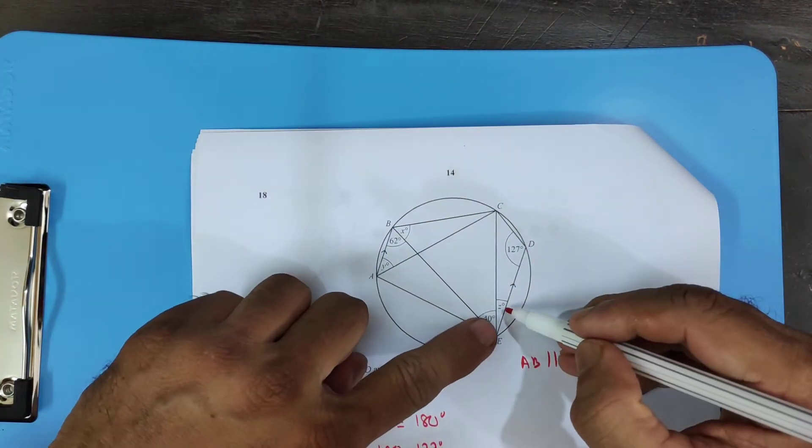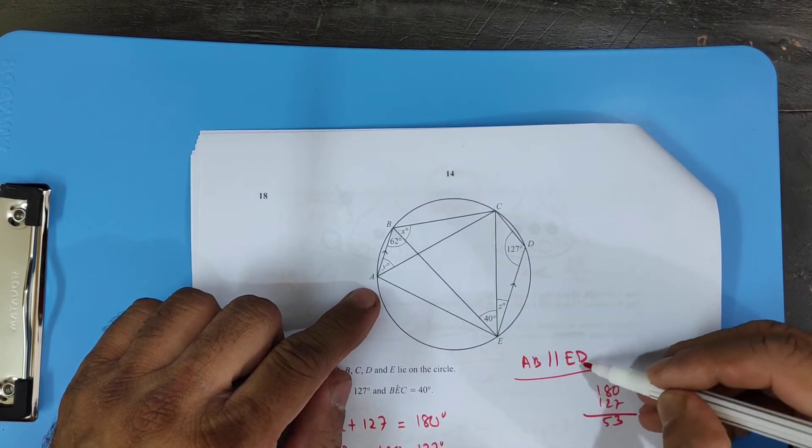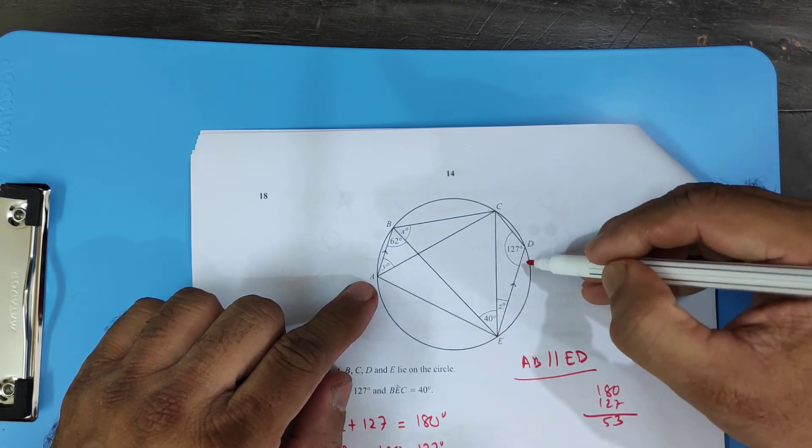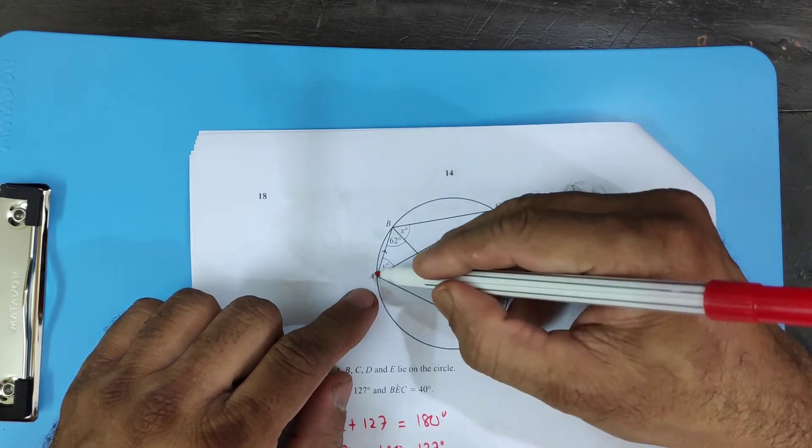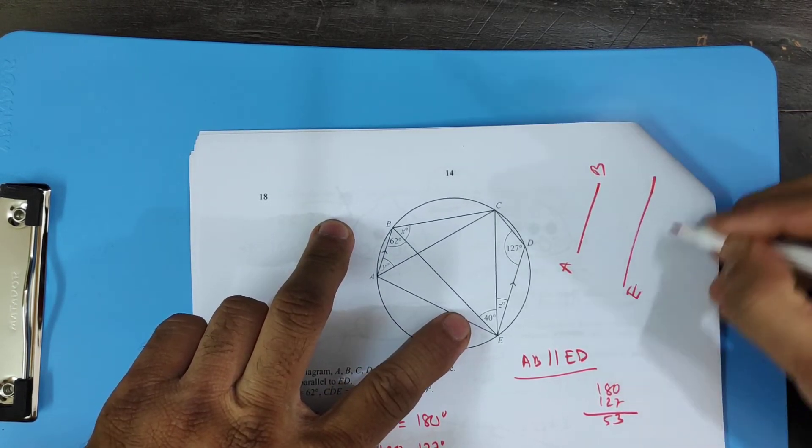Find z. Now this is z. See this parallel line. A b is parallel to e d. A b is parallel to e d. So when a b, this is a b, and this is e d, and this line b e is transversal line.